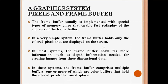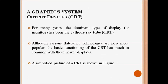The frame buffer is implemented as a special type of high-speed memory chip because its contents must be moved very quickly. In a simple system the frame buffer holds only color pixels displayed on screen, but in a complex system it can contain additional information such as depth information and color buffers — red, green, and blue buffers — used in the RGB system.